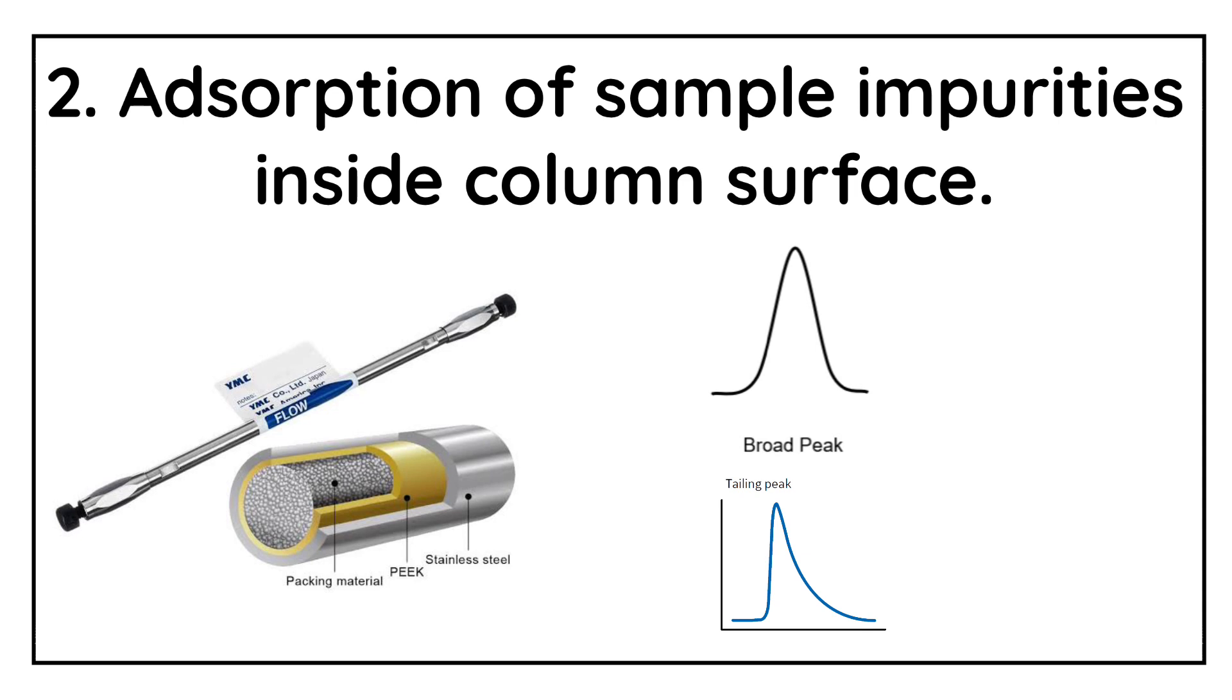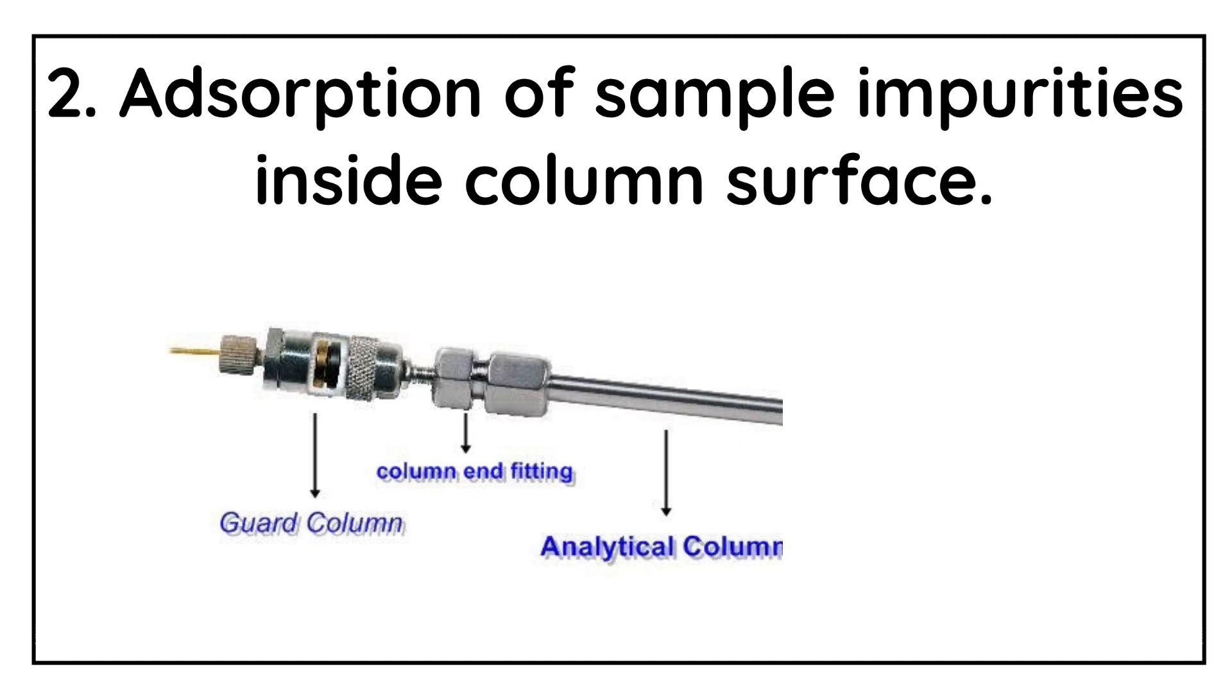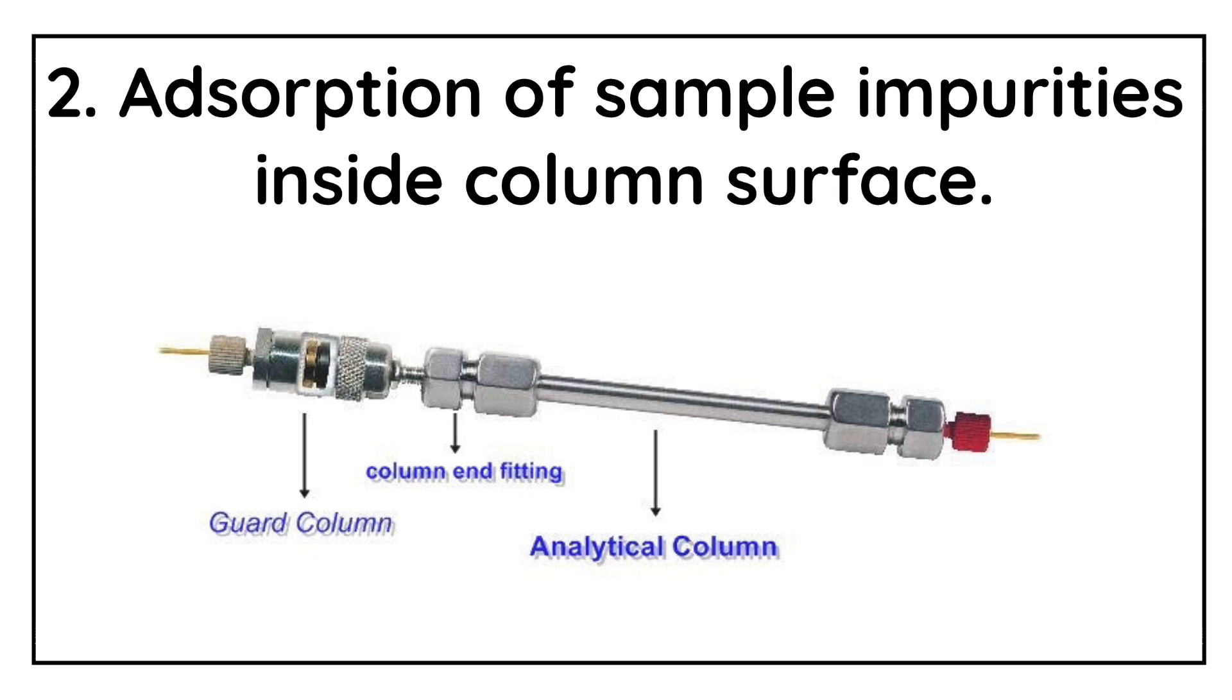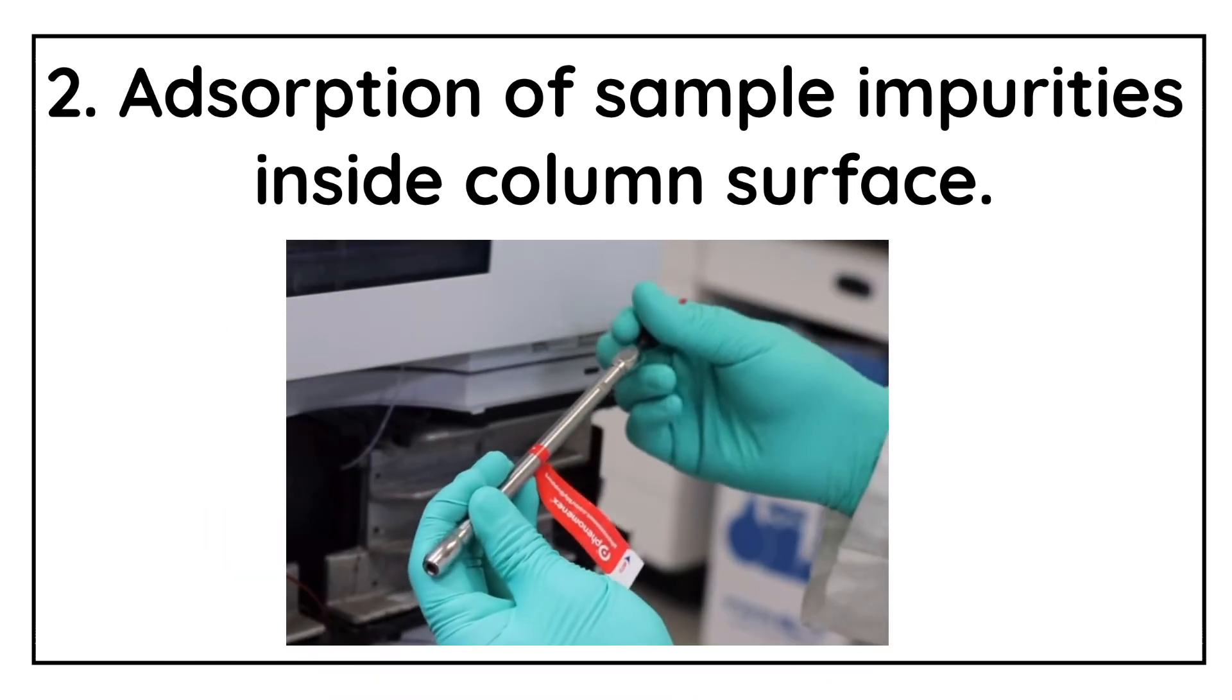Buildup of the sample impurities or the contaminants can also be reduced by the usage of guard columns. As you may already know that the packing of the guard column is always equivalent to the main analytical column. Guard column will capture the strongly retained sample impurities and will prevent their entry into the main column. Guard column should be replaced time to time.